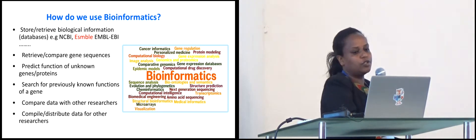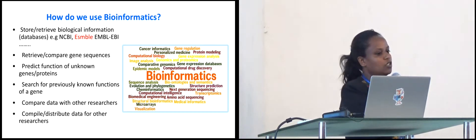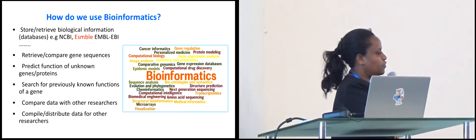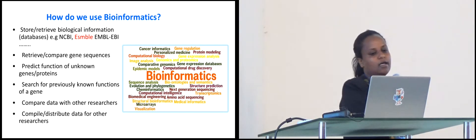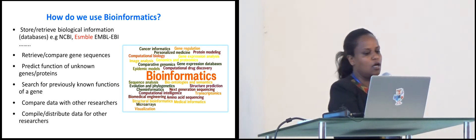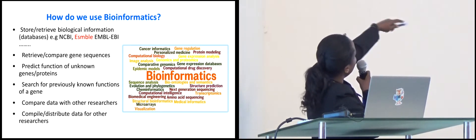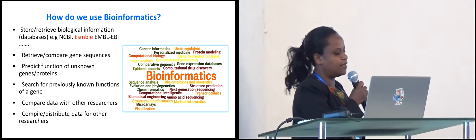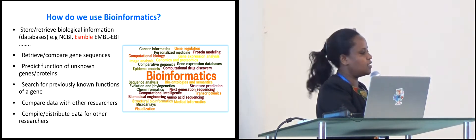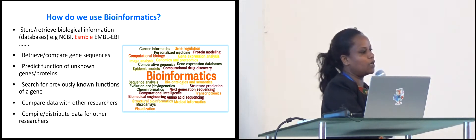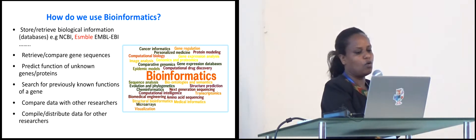How can we use bioinformatics for agricultural research and food security? We can store and retrieve biological information — there are different databases available for biological data. We can compare gene sequences based on the biologist's interest, predict known or unknown genes or proteins, and do every analysis depending on the research question we need to address. We can also compare data country-wise, region-wise, and species-wise to conduct comparative research.